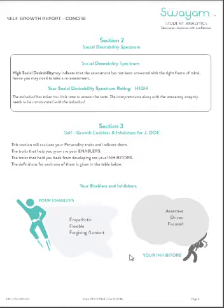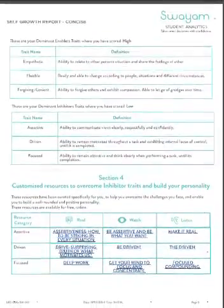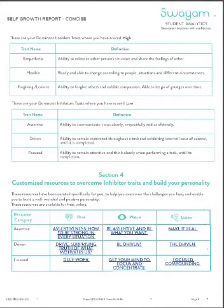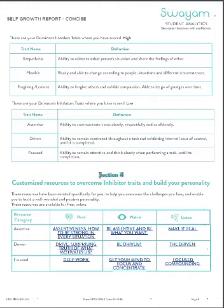Moving on to page 5, you will see the list of qualities and the meaning of each. The meaning will help you understand the words better. If you still do not understand, you can always search for the word on Google. Section 4 is important because it helps you to improve the qualities that are stopping you from achieving success.